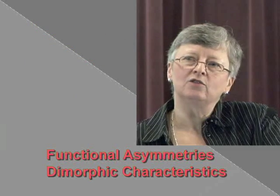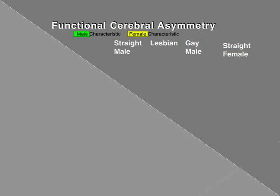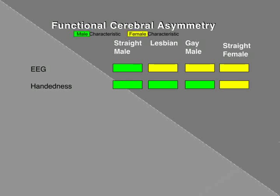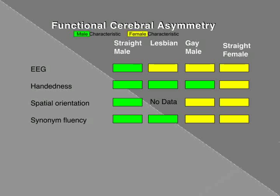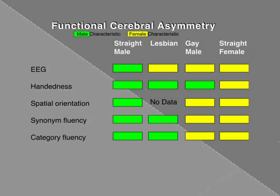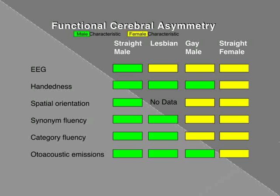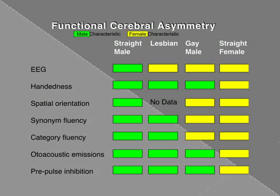Taking all of that into account, this is a summary of the studies that have been done looking at all of those functional cerebral asymmetries. You can see on the left that straight males are different from straight females — I've given them different colors so it's easy to follow. Looking at the studies in which lesbians have been studied — and not all of them included spatial orientation, so there are no studies in that area for lesbians — in the majority of cases, these studies showed that lesbians had much more of the straight male pattern.